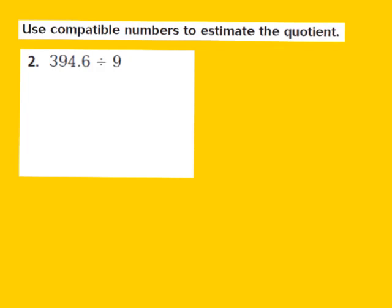Let's take a look at question number 2. Our job is again to use compatible numbers to estimate the quotient. For number 2, they give us 394 and 6 tenths divided by 9. Looking at my divisor of 9, a whole number close to 9 that is really easy to work with mentally is 10.